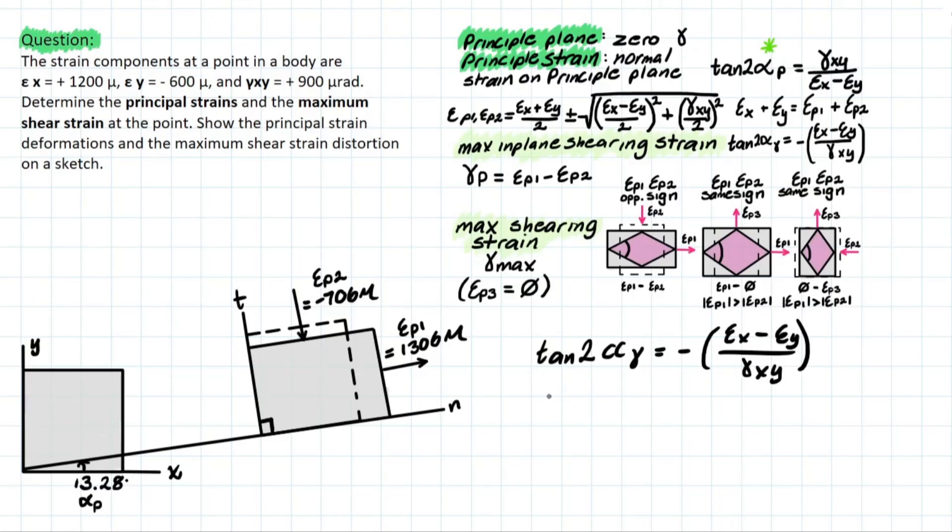It's a very similar solving process where we are determining that angle by taking one half. This will now be negative due to this sign. We're taking the tan inverse of what is given to us. So what's given to us? We have the 1200 minus the negative 600 and we are dividing that by the 900 shearing strain,